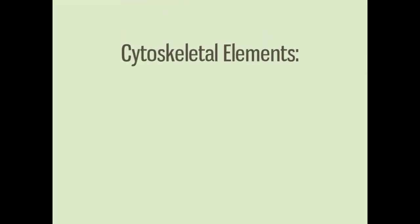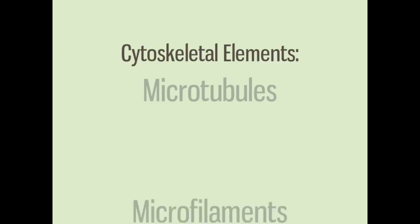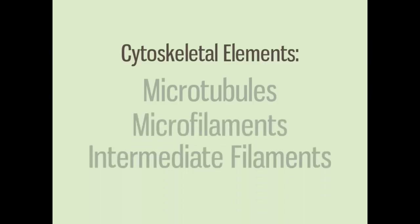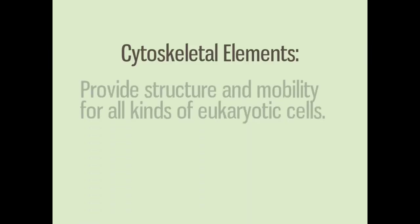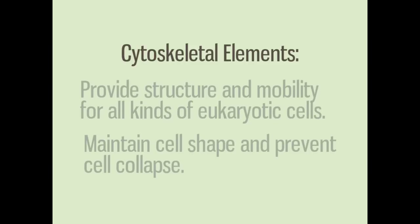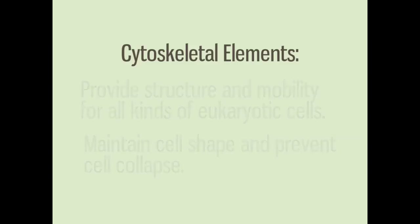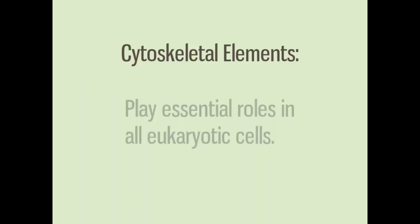All together, the three types of cytoskeletal elements — microtubules, microfilaments, and intermediate filaments — provide structure and mobility for all kinds of eukaryotic cells. All are involved in maintaining cell shape and preventing cells from collapsing in the sometimes difficult environments of living beings. From moving chromosomes during cell division, to moving entire cells, to anchoring organelles, the cytoskeleton plays essential roles in all eukaryotic cells.